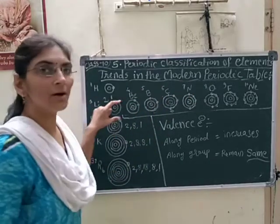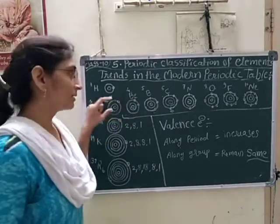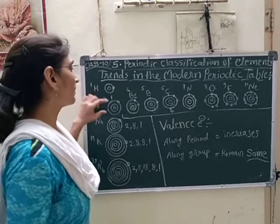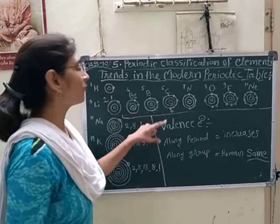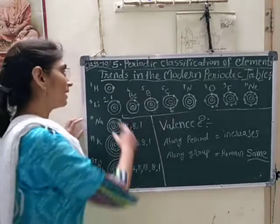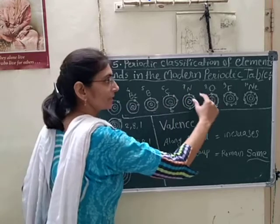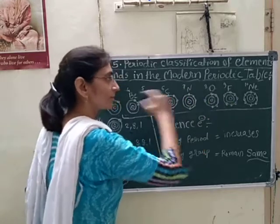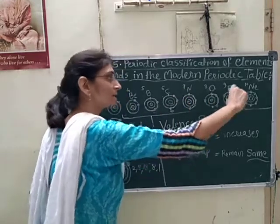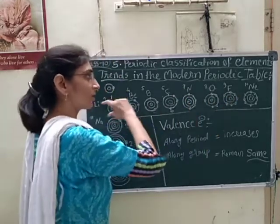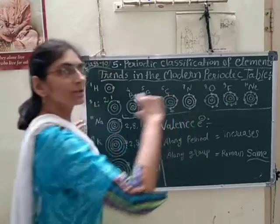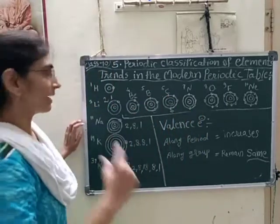So what is the trend of the period? The periodic trend of valence electron is that electrons are in increasing order. That means electrons are increased along the period.